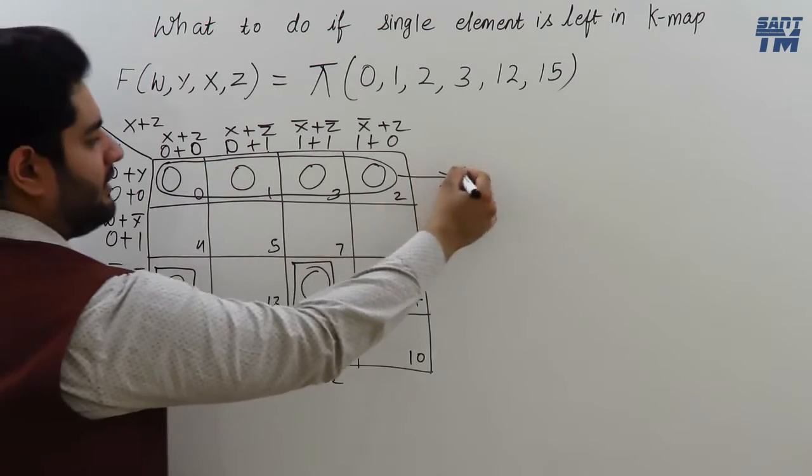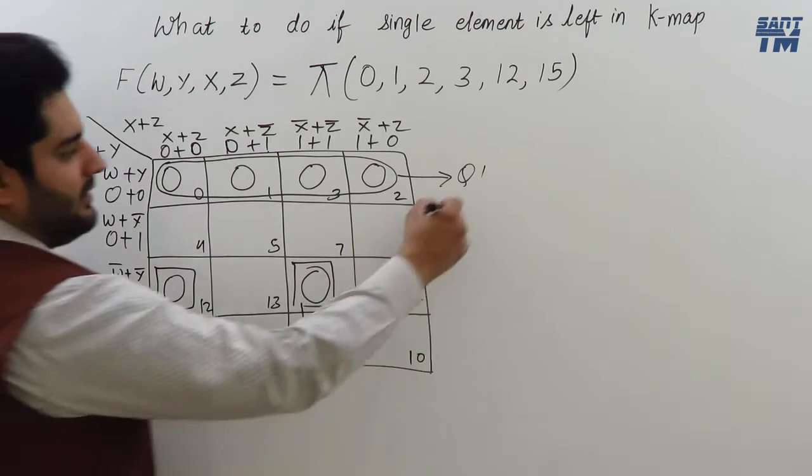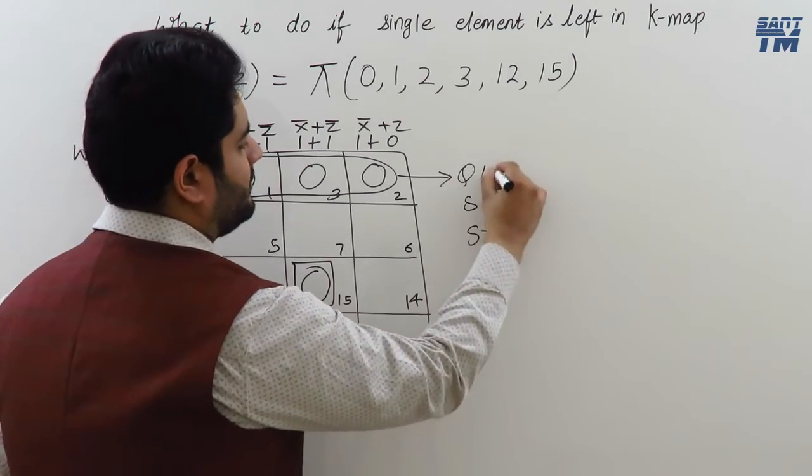So, this is the required quad 1 and this is the single 1, single 2 because it cannot be grouped with any of the groups. So, now we have to make the expressions for them. Quad 1, single 1 and single 2.